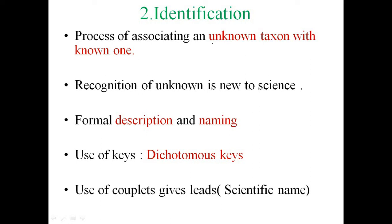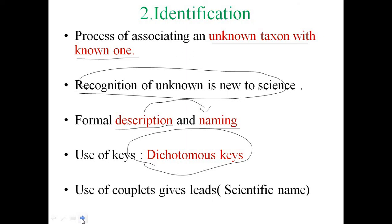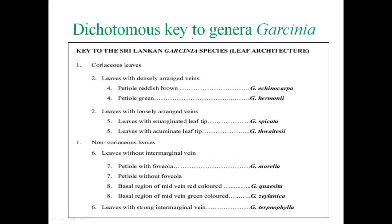Identification is the process of association of an unknown taxon with a known one. It also recognizes unknown taxa that are new to science, involving formal description and naming. This description is done with the help of dichotomous keys — which you are familiar with — using couplets of characters. The dichotomous keys give a description of the plant, and finally a binomial nomenclature is assigned. An example given here is Garcinia, commonly observed in the Cocom region.